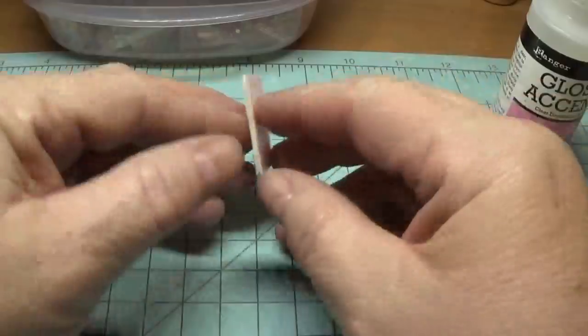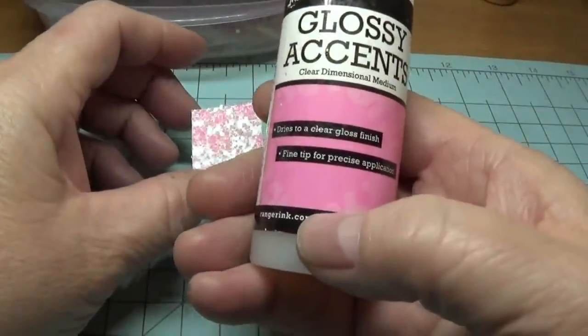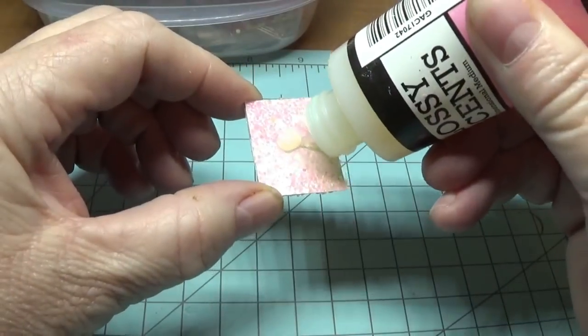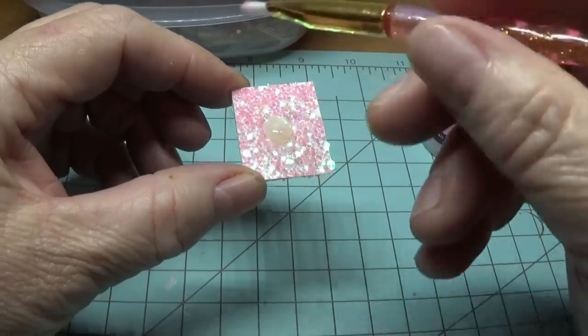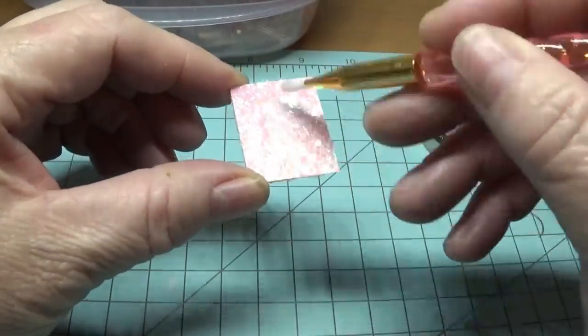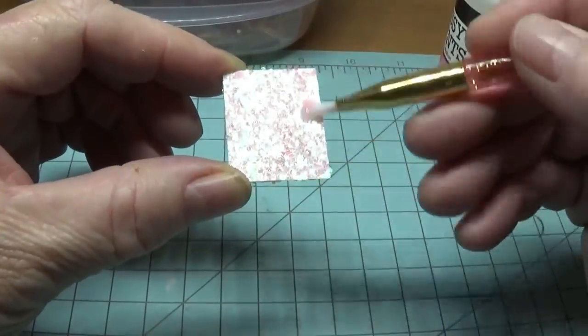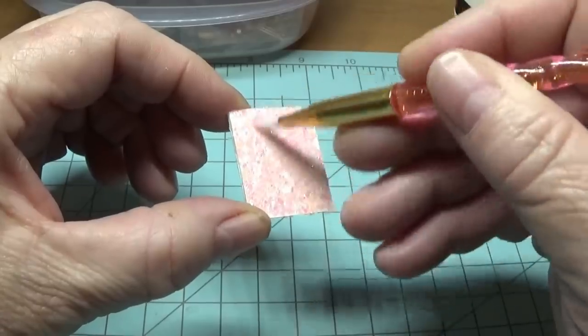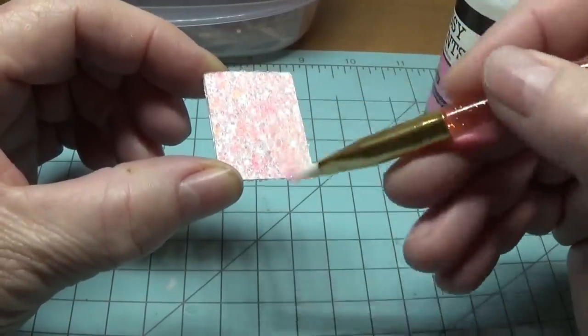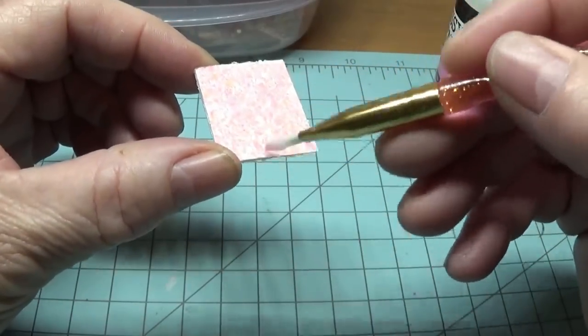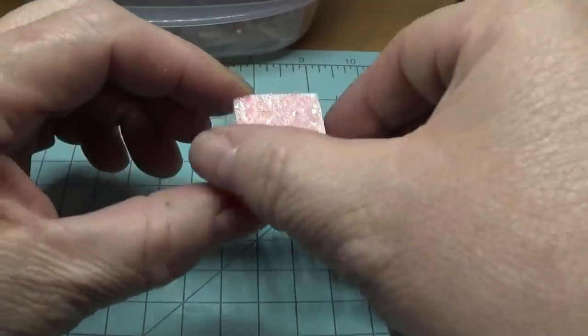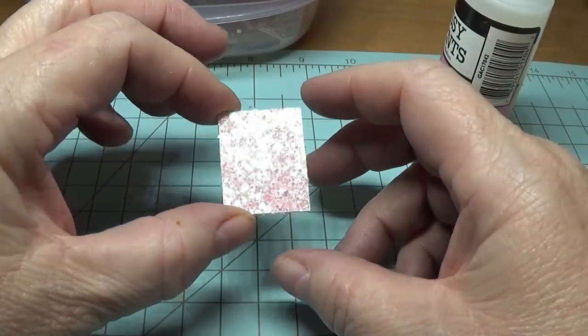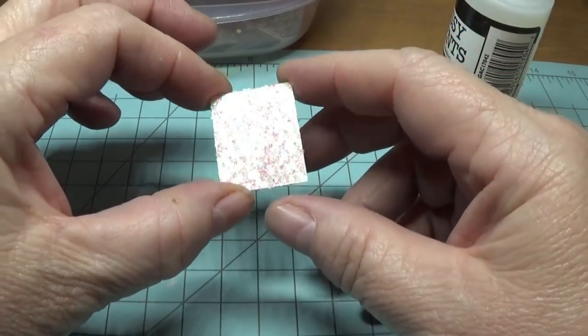This is what we're going to do next. We're going to put a little bit of this glossy accents on. We're not going to put a real thick coat. We're just going to put a thin little amount. Take your paintbrush and spread it all around. Once again, the key thing is to make sure this is a very thin coat, because we still want that glitter to shine through. Once this is dried on the front, you're going to flip over the back and do the same thing. Then just let it sit overnight, just to make sure that it's nice and hard.